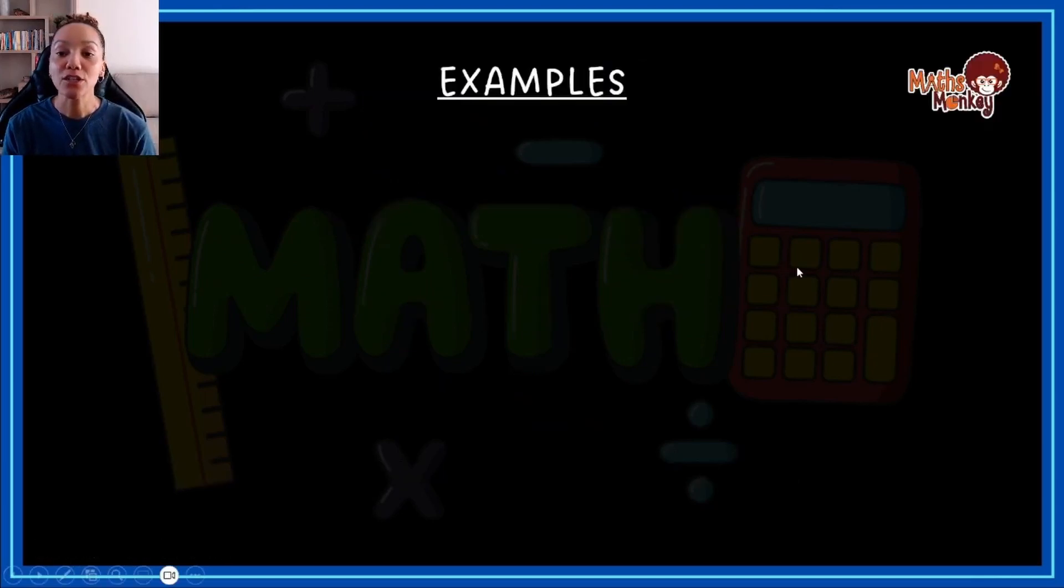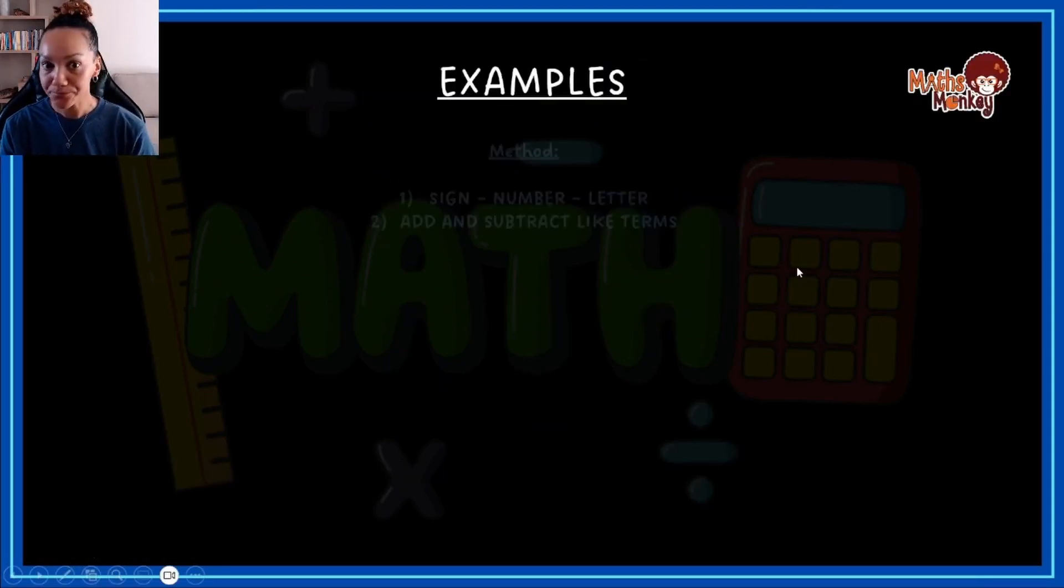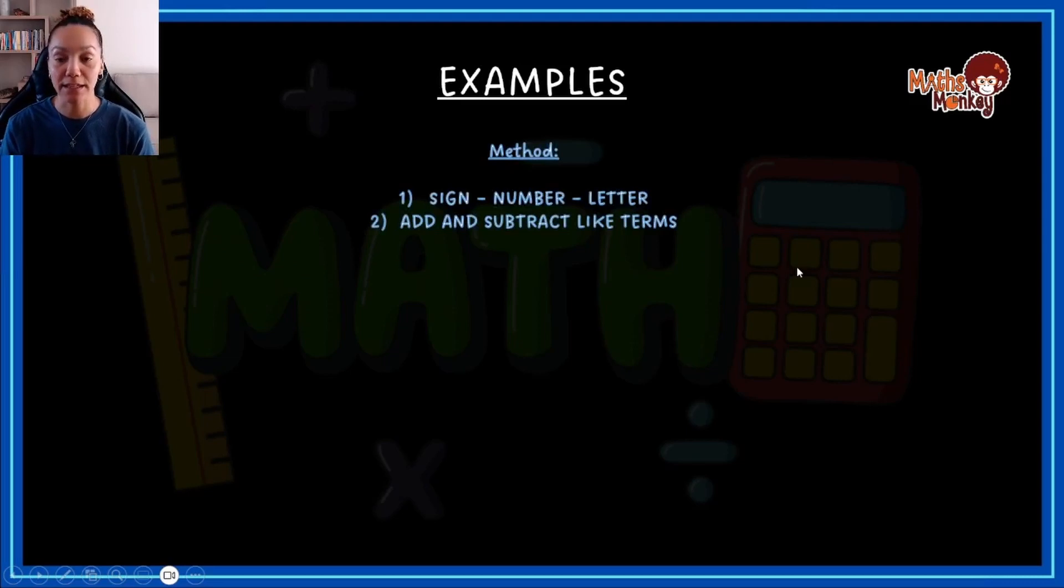So let's start with some examples. The method that we want to use for this grade 10s is we want to, when we are multiplying, we always multiply the sign first, then the number, and then the letter. And then with the answers, once we've done that with every term, we then add and subtract like terms. So these are the concepts and these are the algebra rules that you learn from grade 8 and grade 9 that would now be applied to grade 10.